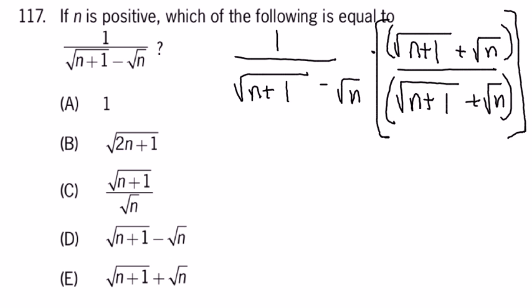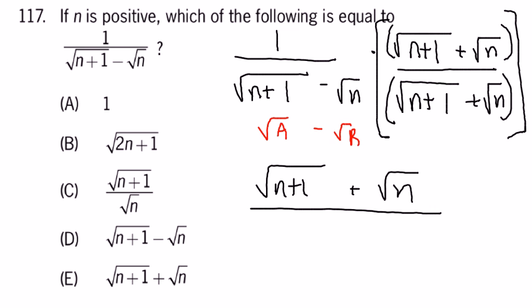The numerator is just going to be root N plus 1 plus root N. And the denominator is exactly one of these root A minus root B times root A plus root B, which we just demonstrated was A minus B. In other words, in this case, it's going to be N plus 1 minus N.